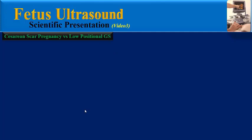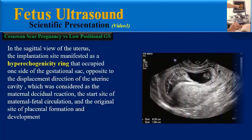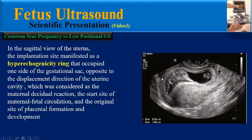In the sagittal view of the uterus, the implantation site manifests as a hyperechogenicity ring that occupies one side of the gestational sac opposite to the displacement direction of the uterine cavity, which is considered the maternal decidual reaction, the start site of maternal-fetal circulation, and the original site of placental formation and development.